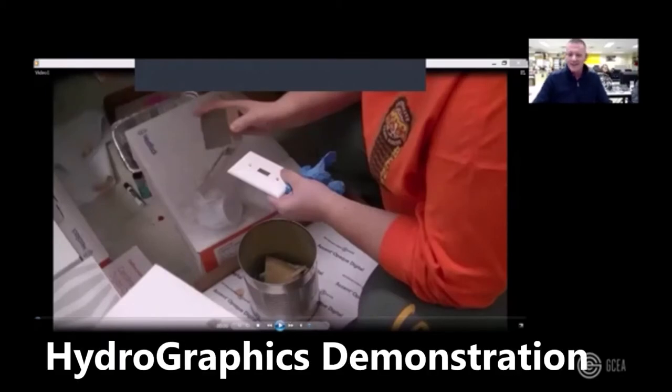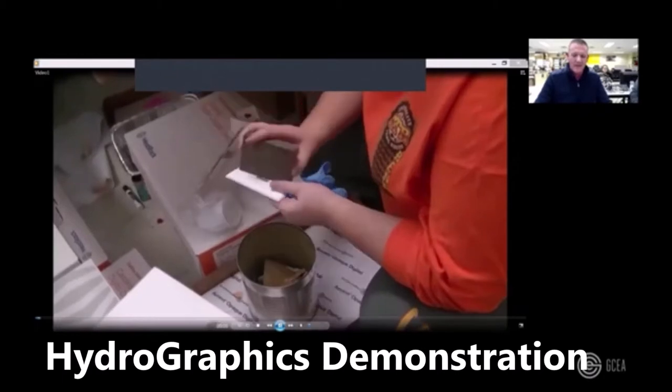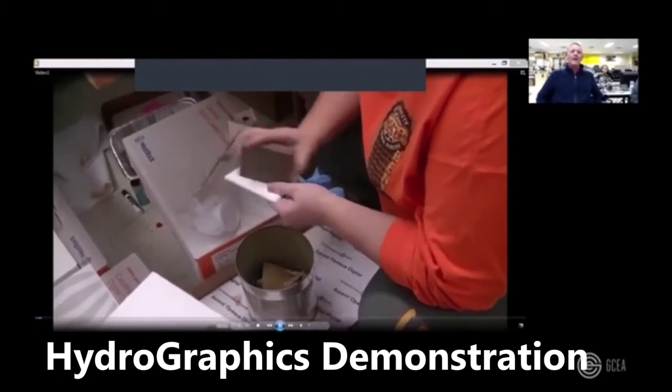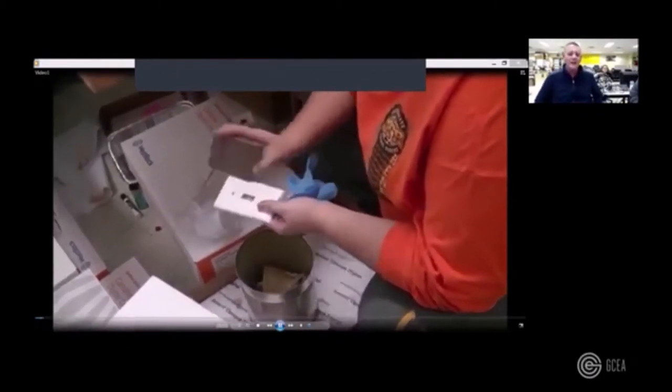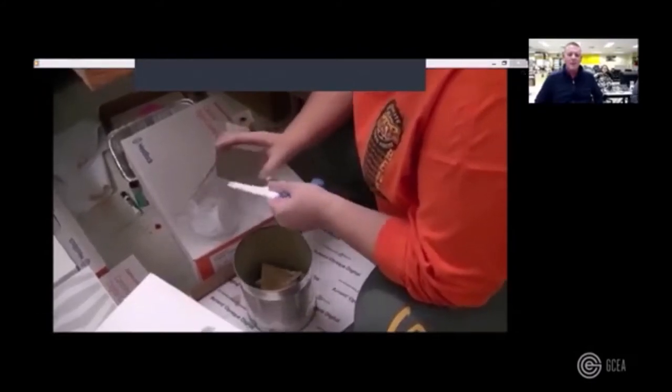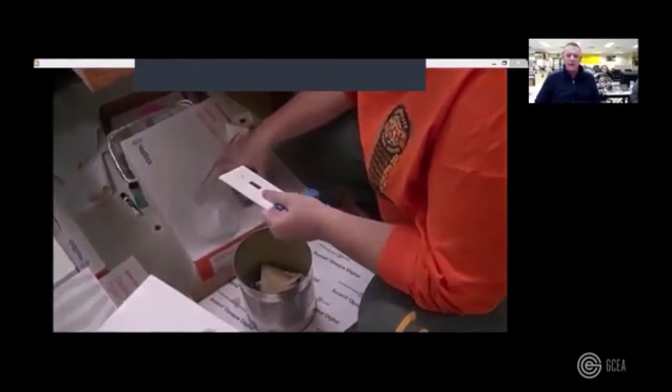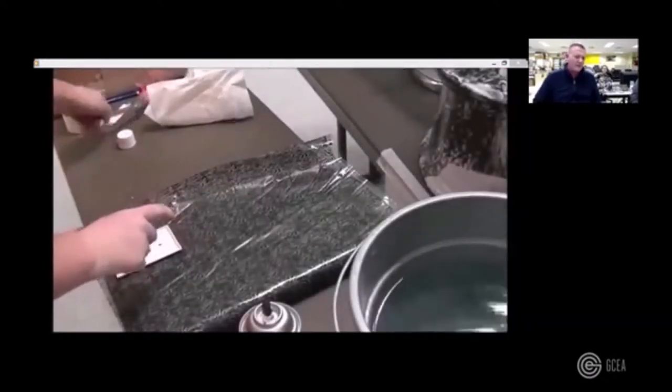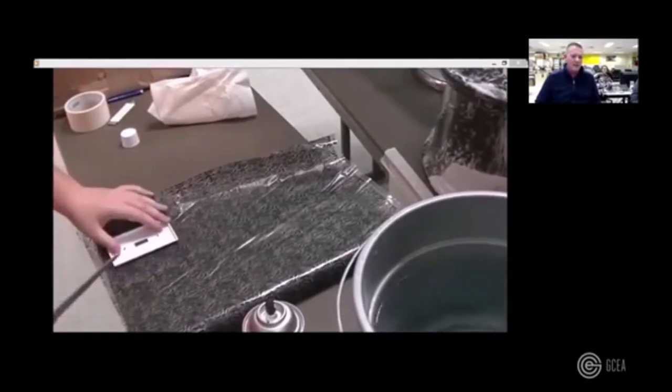All right, this is the hands we're looking at right now is Alyssa. Right here I am sanding a light switch cover to prep it to be dipped. We primed the light switch cover with primer, just use sandpaper to smooth it down, give it a nice smooth finish.